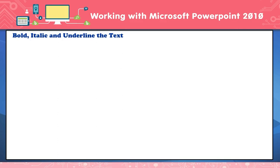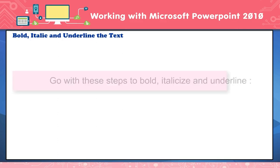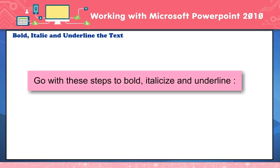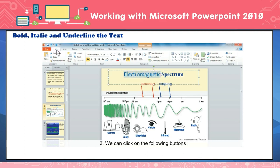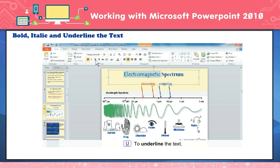Bold, italic, and underline the text. To bold, italicize, and underline: select the text. Click on the Home tab. We can click on the following buttons — B to bold the text, I to italicize the text, U to underline the text.